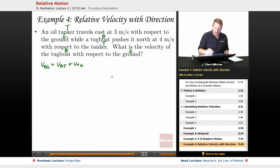Now what do we know? The velocity of the tugboat VBT with respect to the tanker is 4 meters per second. The velocity of the tanker with respect to the ground is 3 meters per second to the east.